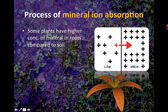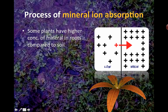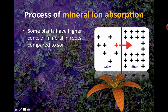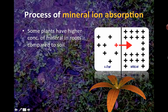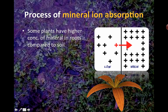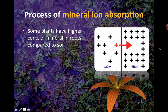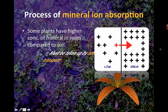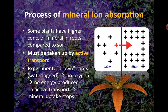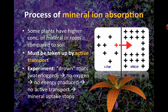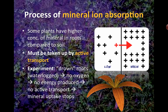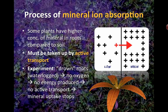For mineral ion absorption — if we're moving from an area of low concentration to an area of high concentration, as you've seen in various parts of the biology syllabus, anytime you have to transfer things against their concentration gradient, you need energy in the form of ATP. That's called active transport. For root cells to take up minerals against their concentration gradient, we require ATP.